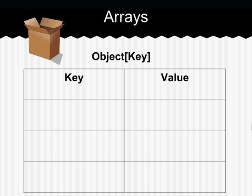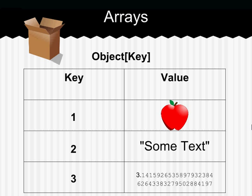Inserting those objects in that order will create this array. Our array will have three keys. The first will be the apple object, then the text, and then the number.